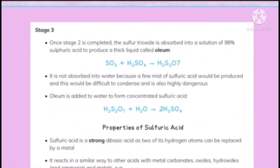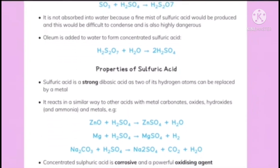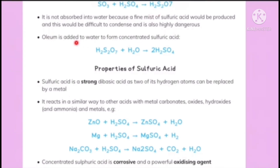Stage three: once stage two is completed, sulfur trioxide is absorbed into a solution of 98% sulfuric acid to produce a thick liquid called oleum. The equation is: SO₃ + H₂SO₄ → H₂S₂O₇ (oleum). It is not absorbed directly into water because a fine mist of sulfuric acid would be produced which is difficult to condense and highly dangerous. Then oleum (H₂S₂O₇) is added to water to form concentrated sulfuric acid: H₂S₂O₇ + H₂O → 2H₂SO₄.